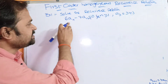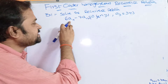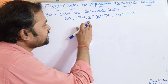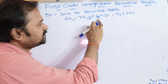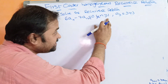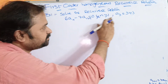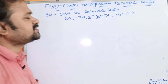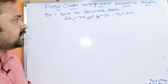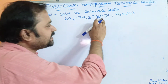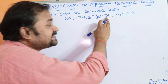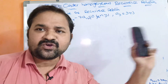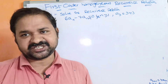Let us solve the first example. Solve the recurrence relation: 6AN − 7AN−1 = 0, for N greater than or equal to 1, given that A3 = 343. This is a first-order homogeneous recurrence relation.